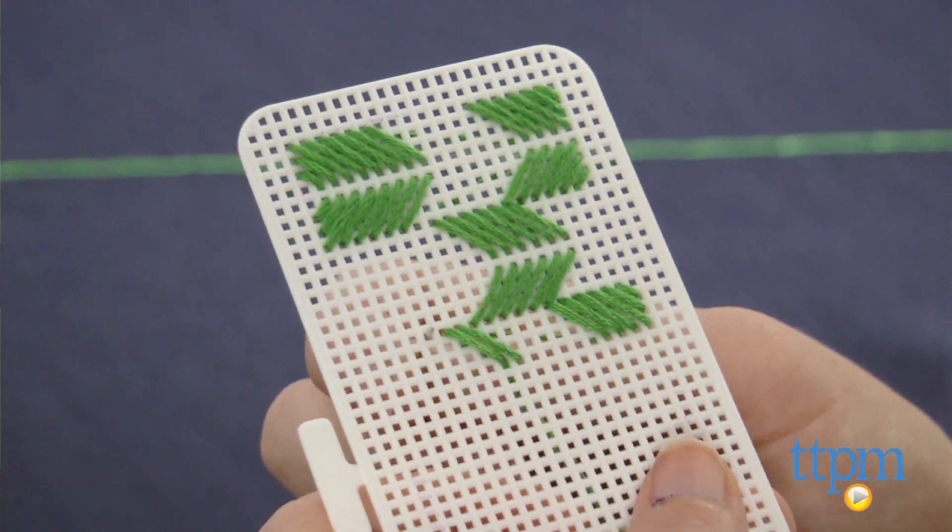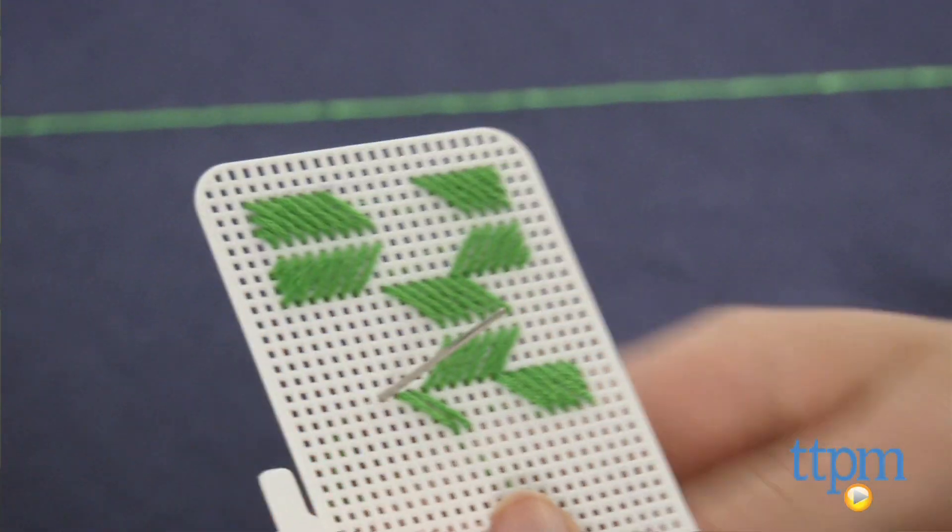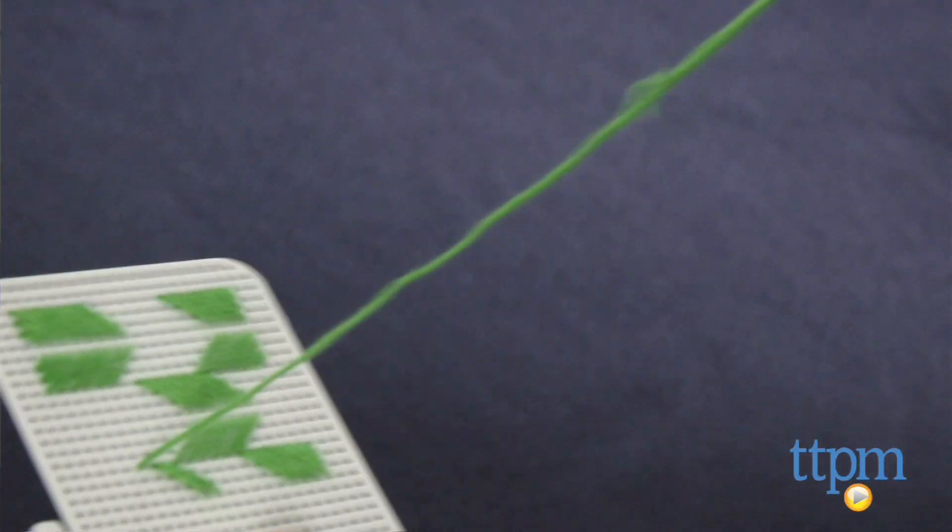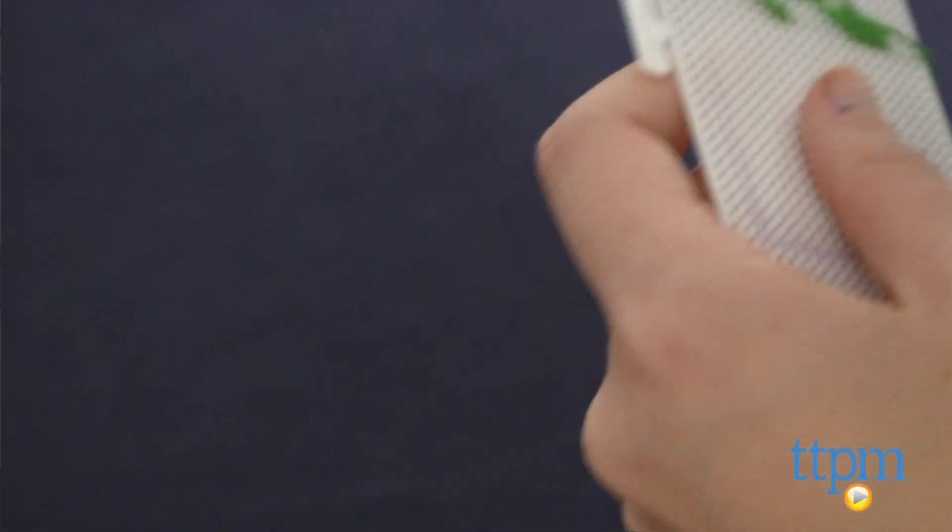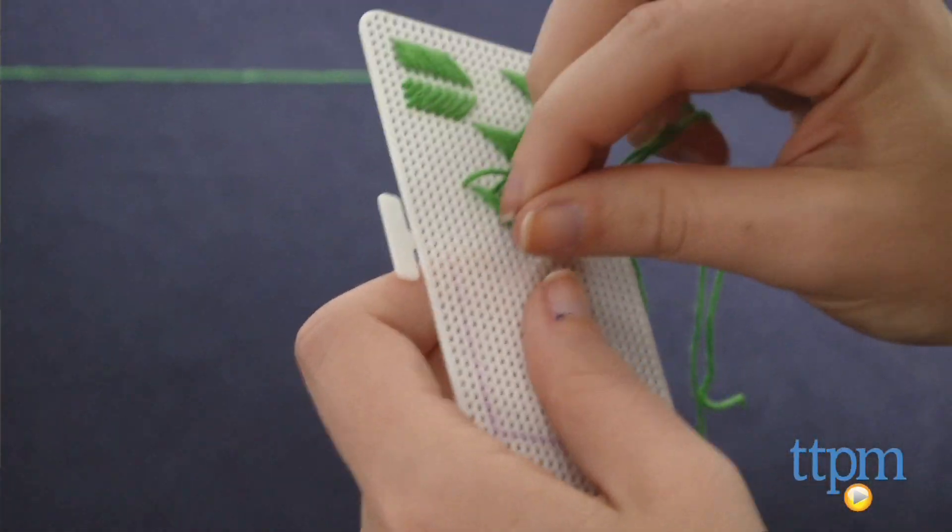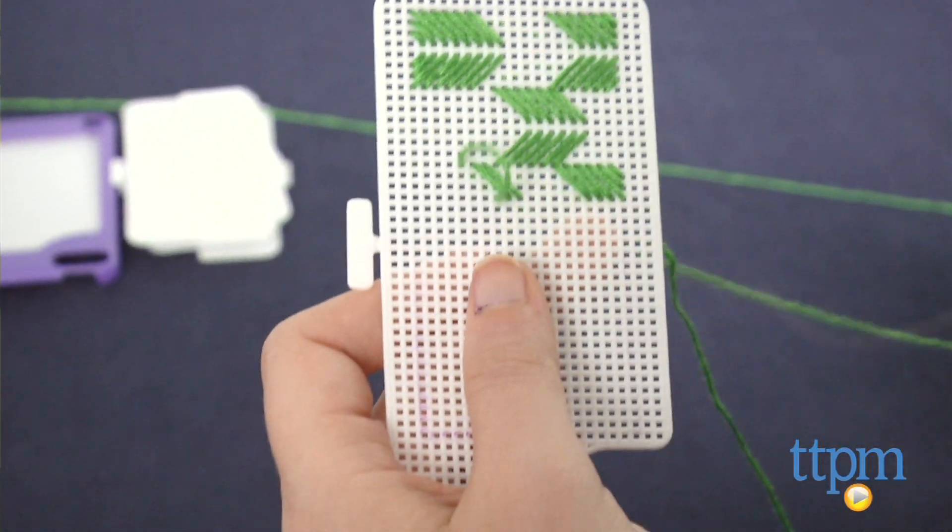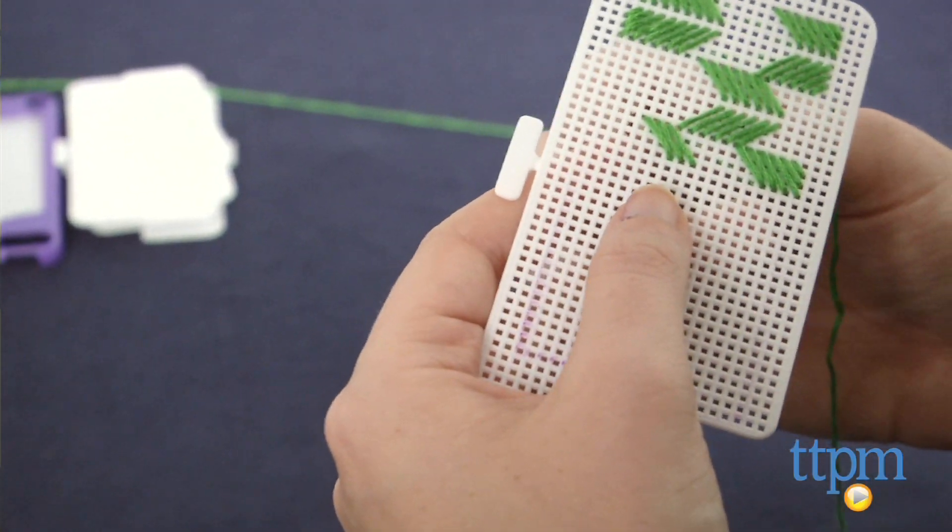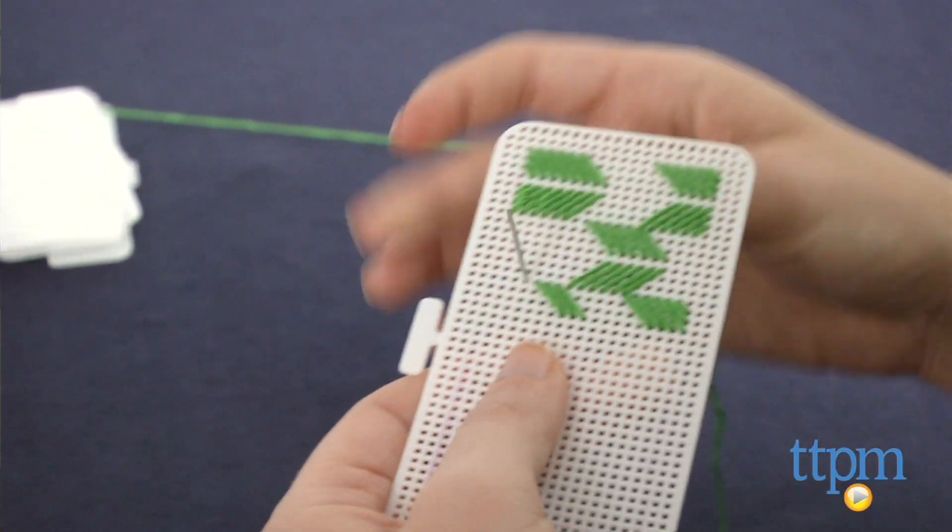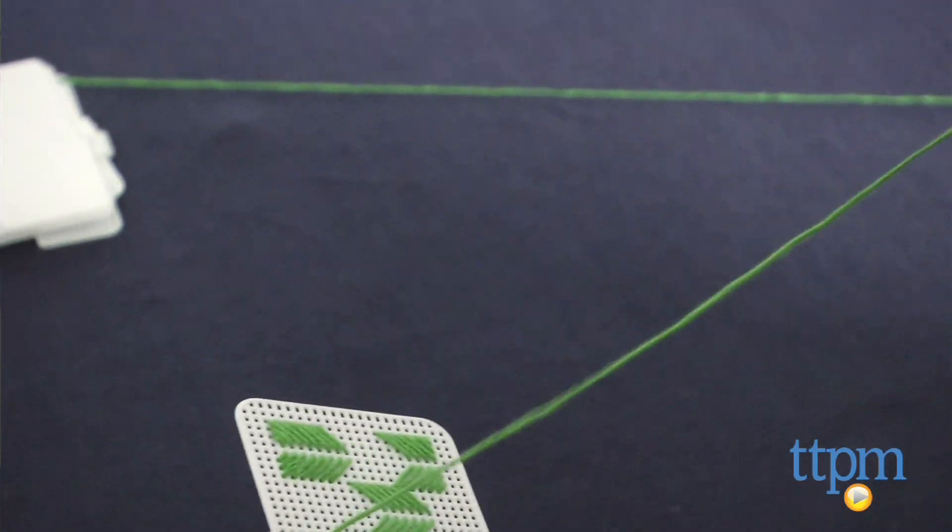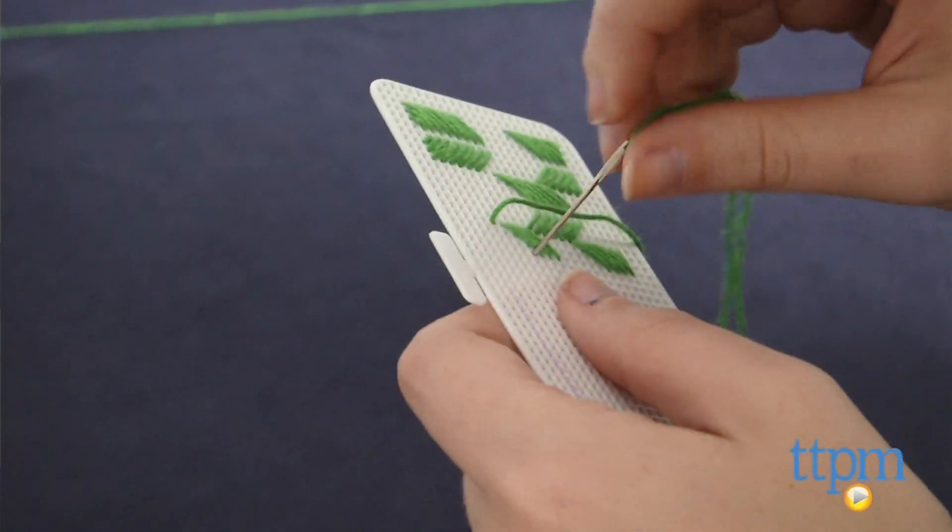There are a few things not included though that you will need: a marker to start, and clear nail polish to seal your threads in place when you're finished. The marker will be used to mark your sewing area on a chosen mesh canvas. We also suggest aligning it with a device case to ensure you are stitching in the area that will be visible.